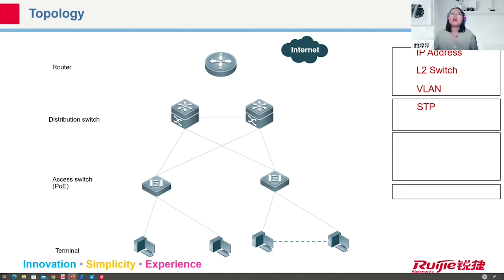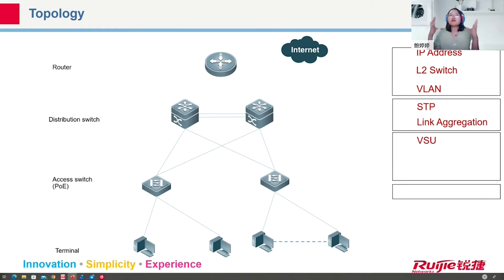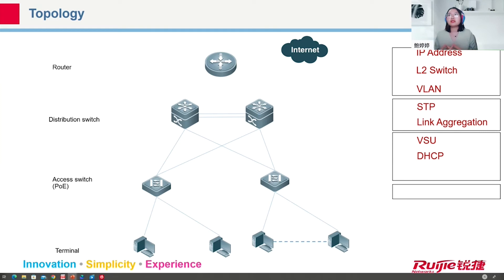When we have a core switch or distribution switch and want to use all links and bandwidth together while avoiding loops, we use link aggregation. For access switches that also want to use both uplinks for forwarding traffic, we use VSU technology to combine two distribution switches into a logical interface. If one device is broken, we can still use the other. For allocating IP addresses to many terminals — or in the wireless network — we use DHCP. When forwarding traffic to a destination, we use the gateway. If one gateway is broken, terminals in that segment cannot forward traffic. To improve gateway high availability, we use VRRP technology.